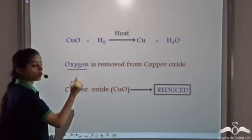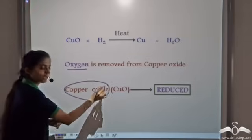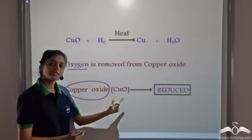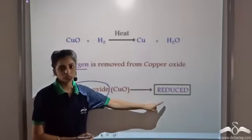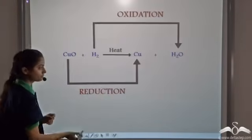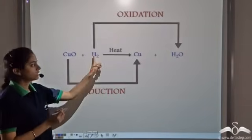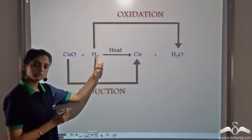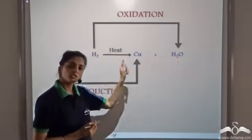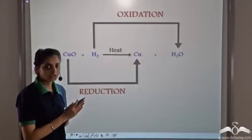In this case, oxygen is removed from copper oxide, so we say that copper oxide is getting reduced. The addition of oxygen is oxidation. Here, oxygen is added to hydrogen, so hydrogen is undergoing oxidation.